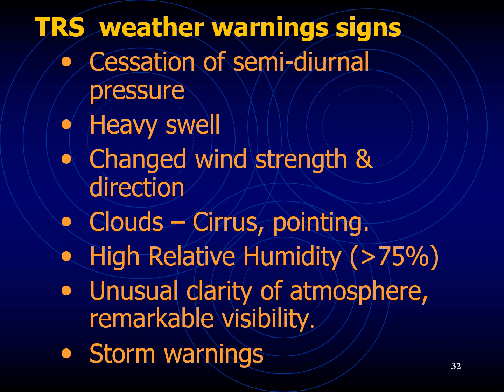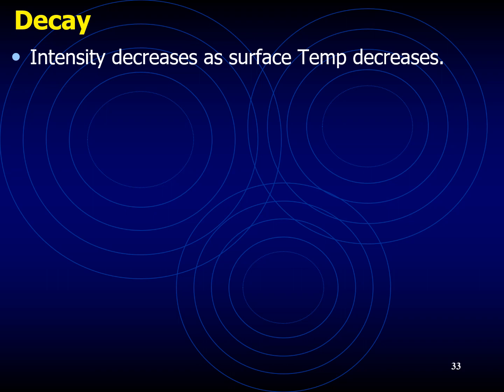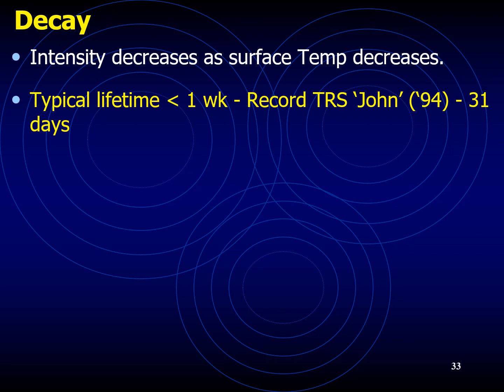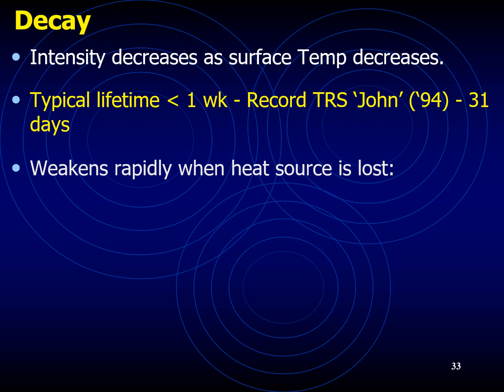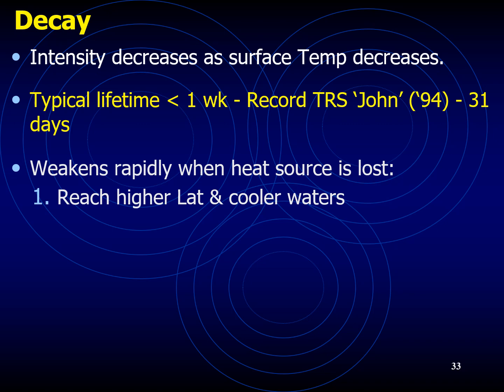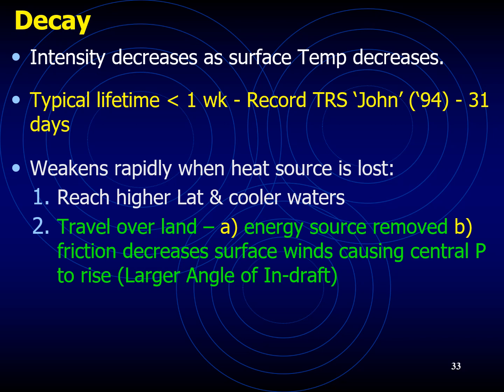How the tropical cyclone starts to decay: as the intensity decreases, the surface temperature decreases. A typical lifespan of a tropical cyclone is about a week or less, the only record being TRS John in 1994, which lasted about 31 days. The tropical cyclone weakens rapidly when the heat source is lost — for example, if on recurving it reaches higher latitudes with cooler waters below 26.5 degrees Celsius. If the TRS transits overland, the water source is removed, moisture is gone, latent heat is gone, the energy source is removed, and friction on land decreases the surface winds, causing central pressure to rise.